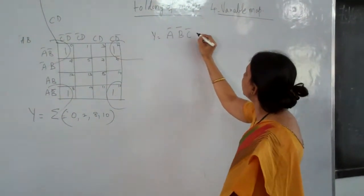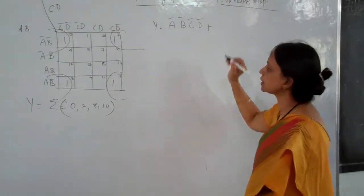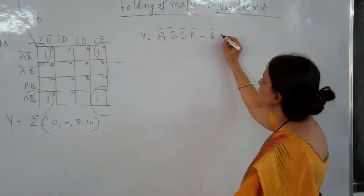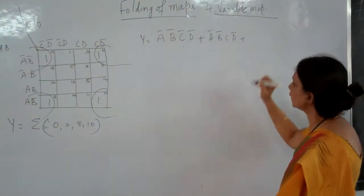B bar, C bar, B bar plus 2. What is 2? A bar, B bar, C bar. Right?